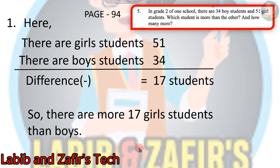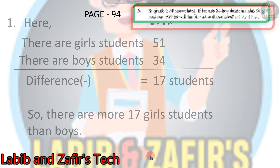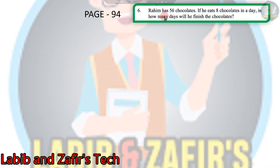So student, this is the first word problem. Let's go to the next word problem. Rohim has 56 chocolates. If he eats 8 chocolates in a day, in how many days will he finish the chocolates? So students, let's see the answer.